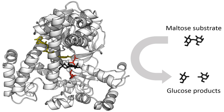Enzyme rates depend on solution conditions and substrate concentration. To find the maximum speed of an enzymatic reaction, the substrate concentration is increased until a constant rate of product formation is seen, shown in the saturation curve. Saturation happens because, as substrate concentration increases, more and more of the free enzyme is converted into the substrate-bound ES complex. At the maximum reaction rate, all the enzyme active sites are bound to substrate, and the amount of ES complex is the same as the total amount of enzyme. Vmax is only one of several important kinetic parameters. The amount of substrate needed to achieve a given rate of reaction is given by the Michaelis-Menten constant Km, which is the substrate concentration required for an enzyme to reach one-half its maximum reaction rate. Generally, each enzyme has a characteristic Km for a given substrate.